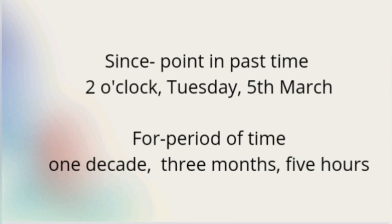We often use 'since' and 'for' with perfect tenses. We use 'since' to talk about a point in past time — for example, two o'clock, Tuesday, 5th of March. 'For' is used to talk about a period of time — for example, one decade, three months, five hours.